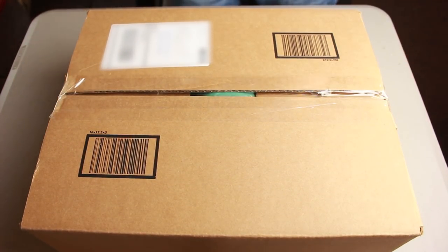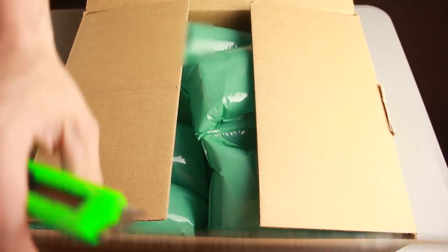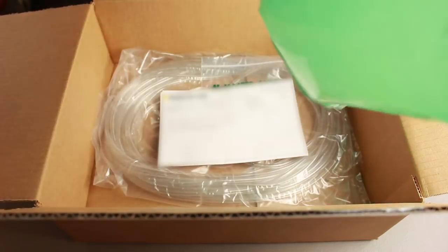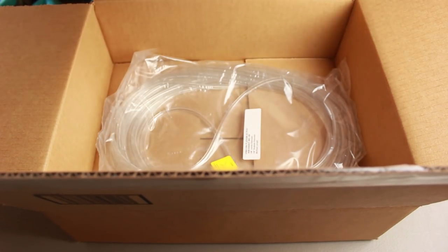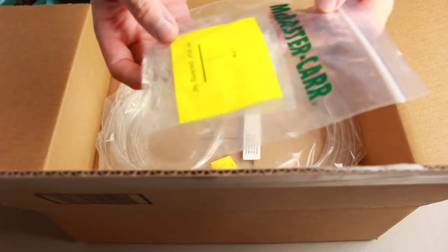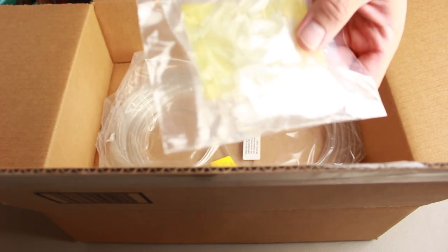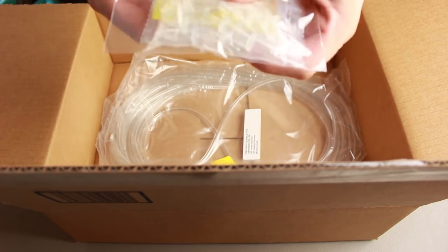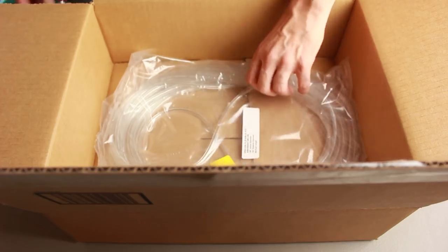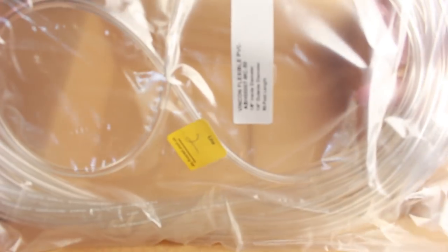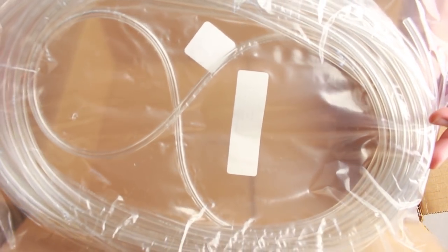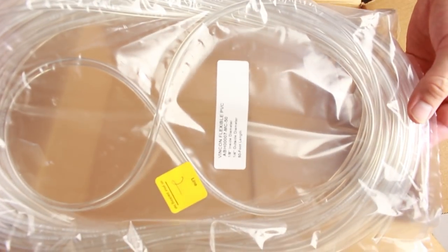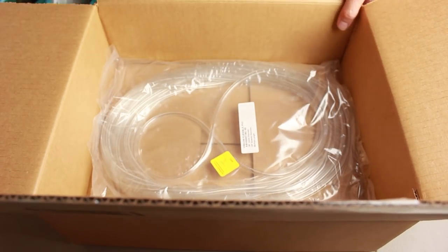We got package number one. This is from McMaster-Carr. First thing from McMaster-Carr, we got these plastic barb tube fittings. They're quarter inch to one-eighth inch. And we get some tubing. We got 50 feet of tubing, holy moly. That's a lot of tube.